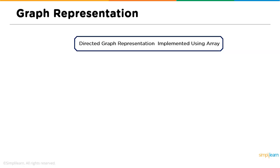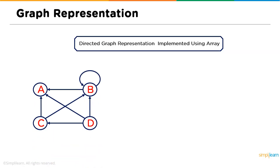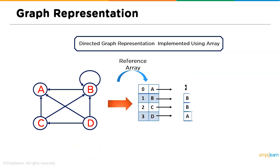Next we have directed graph representation using an array. A is not connected to anything, so it is represented as 0. B is connected to B as well as A, so we have 1. C is connected to B and also to A, so we have 2. D is connected to A, C, and B, so we have 3.